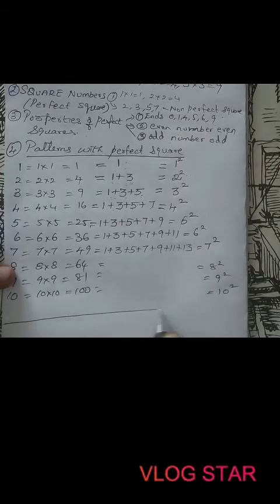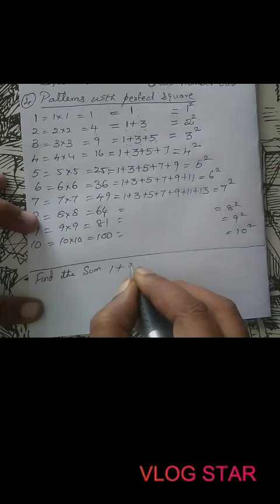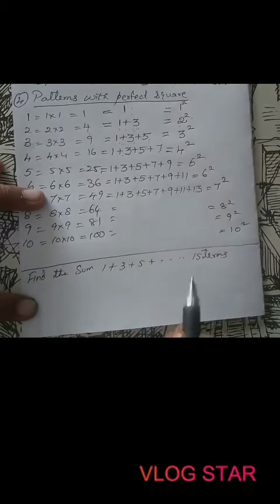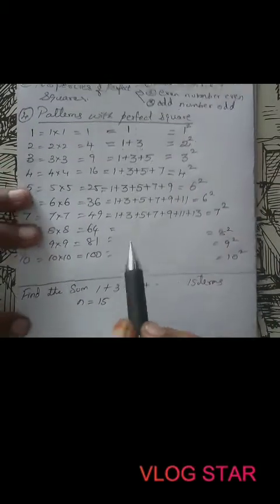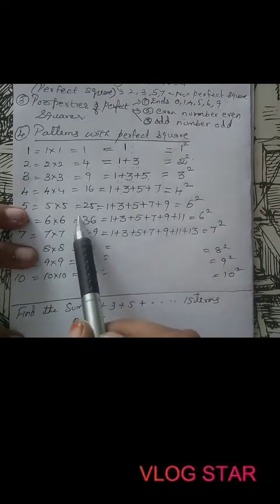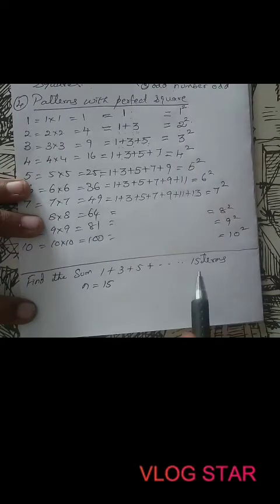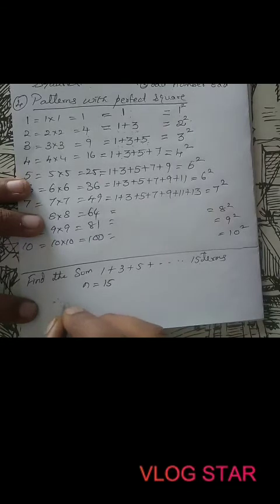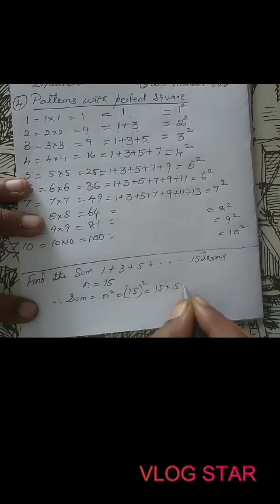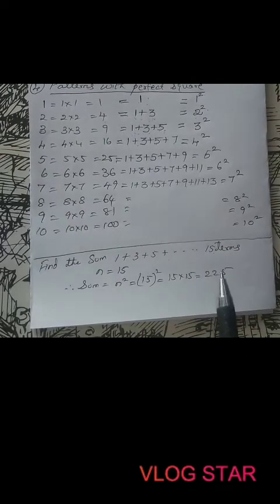So in an exam, if they give you: find the sum of 1 plus 3 plus 5 plus ... up to 15 terms — what is 15 terms? N equals 15. From our previous pattern, you can see that when you have N terms and square it, that is the sum. So therefore, sum equals N squared equals 15 squared equals 15 times 15 equals 225.